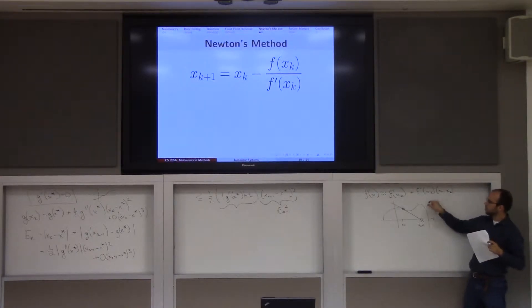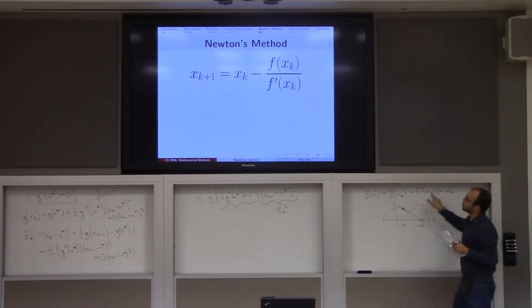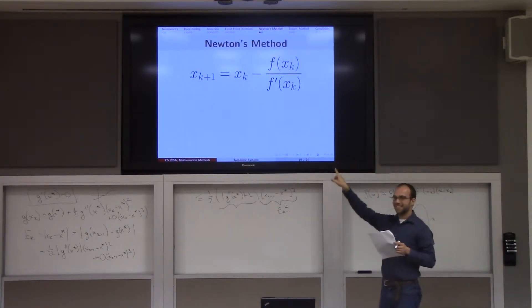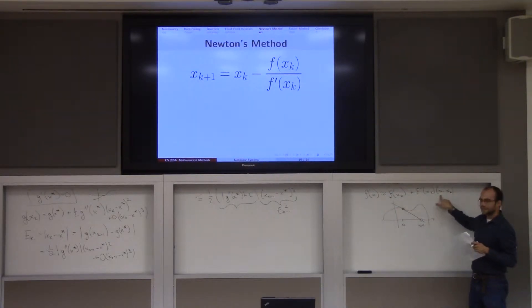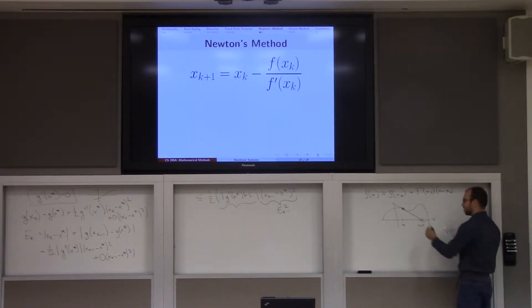Well, one thing we could do is say, solve this thing for x to find our next iterate. And in fact, when you do that, you get this formula here. All this is, is solving this equation for x. We're going to find here to be xk plus 1. And this is called Newton's method.